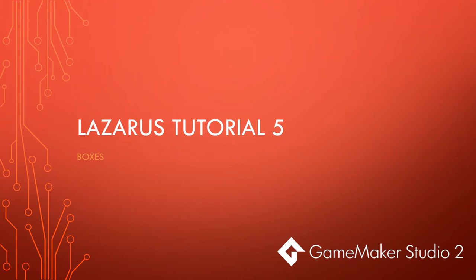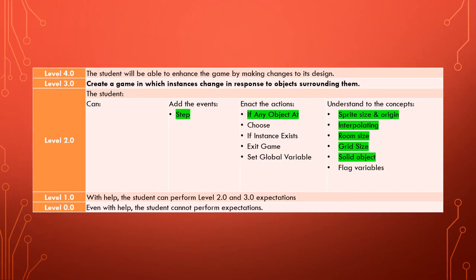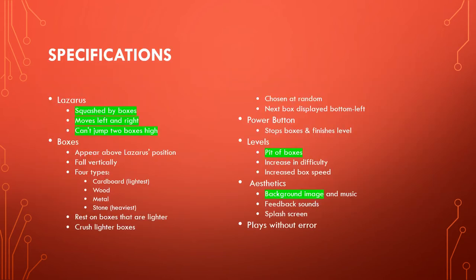Welcome to tutorial 5 in our Lazarus Game Maker Studio 2 series. So far in the series, as we're moving towards creating a game in which instances change in response to objects surrounding them, we have covered the highlighted skills here. And in order to learn those skills, we have so far completed pretty much all the Lazarus specifications, as well as created a pit of boxes, and had a background image output into the game.